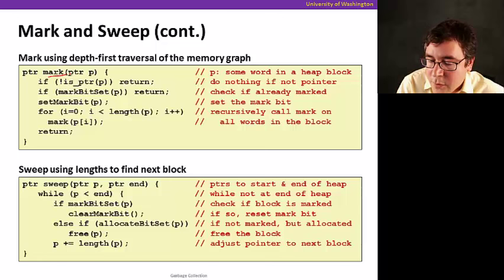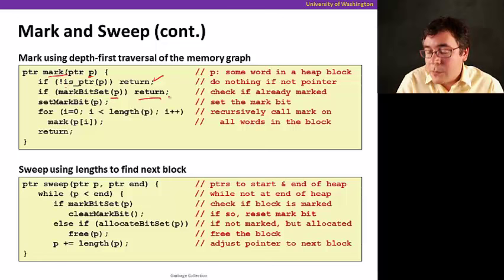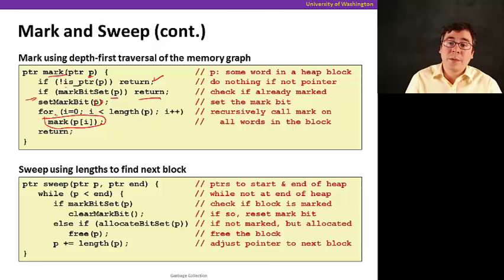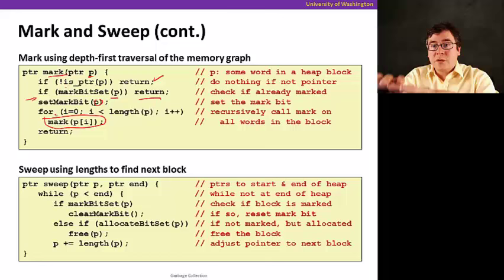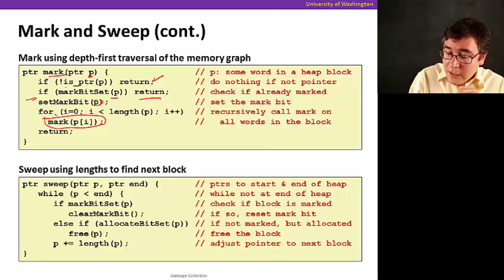All right, so let's see how this works. So this is a mark phase. We start with a pointer p. So if p is not a pointer, you just return. So also, if it's already marked, we return as well. But now if we're here, it's because it is a pointer that hasn't been marked, so we mark it. And not only that, we're going to go over the entire block pointed by p, and we're going to call mark on it. So parts of it are going to be pointers, parts of this block are not going to be pointers. So we recurse. So this is going to mark the entire graph. So we're going to traverse the entire heap, and mark whatever is a pointer, and so on.